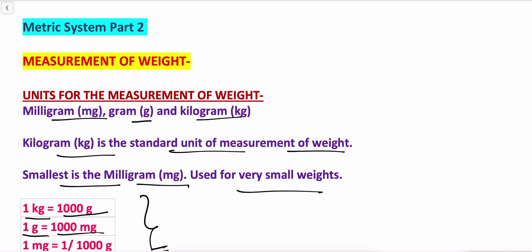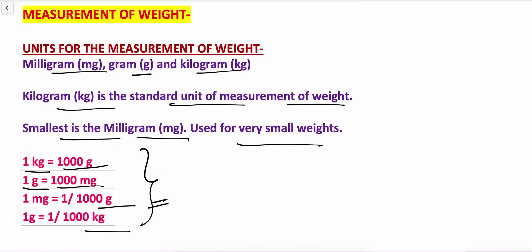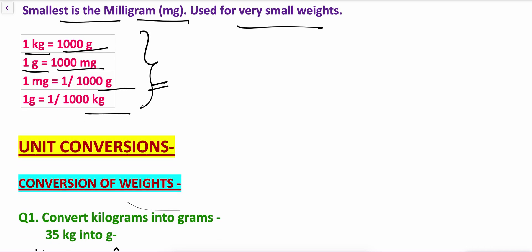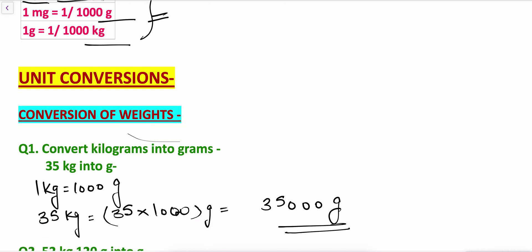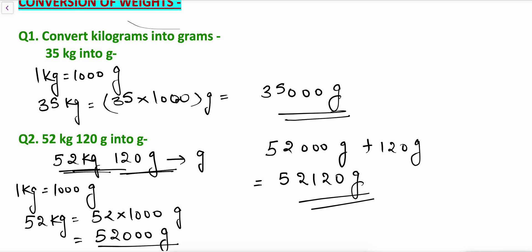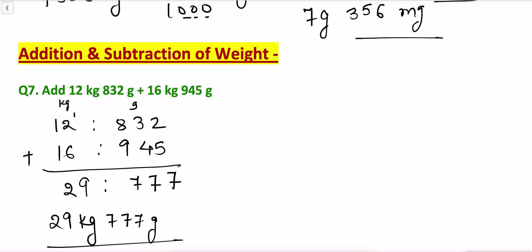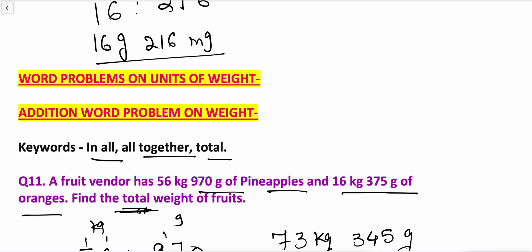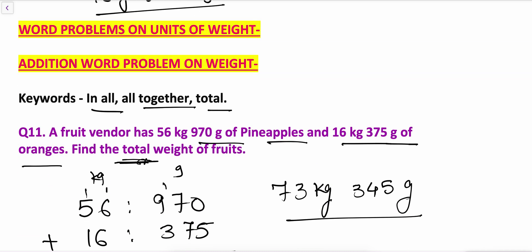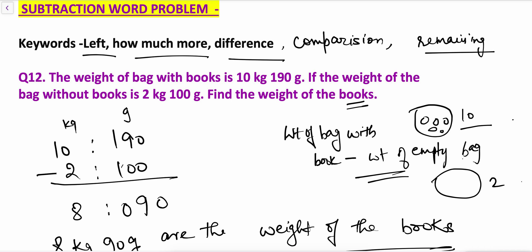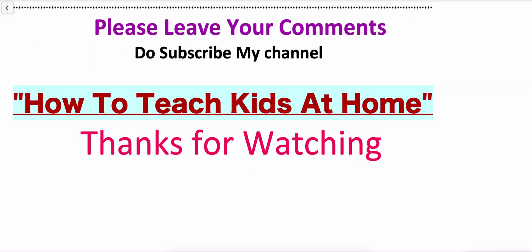In this video on measurement of weight — metric system part 2 — we learned the units of measurement: milligram, gram, and kilogram, where 1 kg equals 1000 grams and 1 gram equals 1000 milligrams. We covered unit conversions, addition and subtraction of weights, and word problems. Addition keywords: 'in all,' 'altogether,' 'total.' Subtraction keywords: left, how much more, how much left, difference, comparison, remaining. If you like my video, subscribe to my channel 'How to Teach Kids at Home.' Thanks for watching.